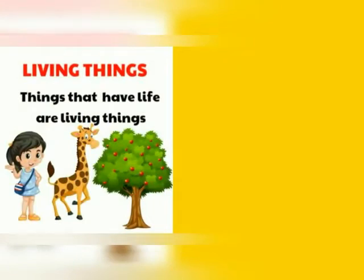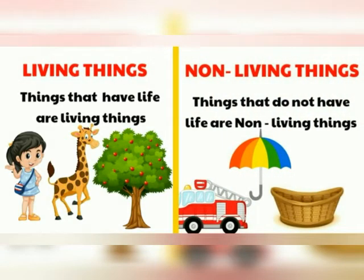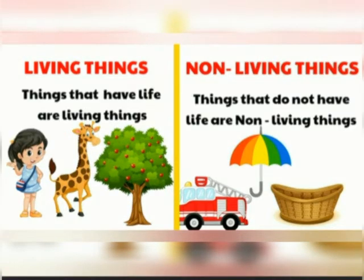Living things: things that have life are living things. A girl, a giraffe, and a tree are living things because they have life in them. Non-living things: things that do not have life are non-living things, like a truck, umbrella, and basket. These things do not have life in them; therefore they are non-living things.